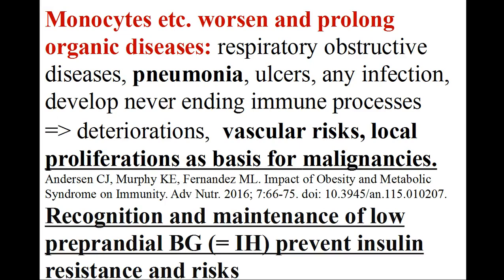Monocytes, LDL, etc. worsen and prolong also organic diseases: respiratory obstructive diseases, pneumonia, ulcers, any infection, and sustain never-ending immune processes that cause deteriorations, vascular risks, and local proliferations as basis for malignancies. Recognition and maintenance of low preprandial blood glucose, corresponding to initial hunger, allows lower bacterial proliferation and lower immune involvement, preventing these risks.